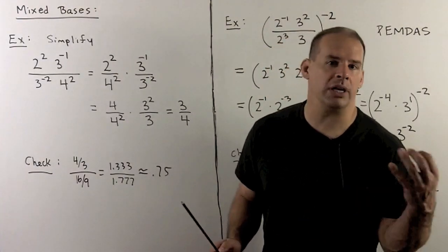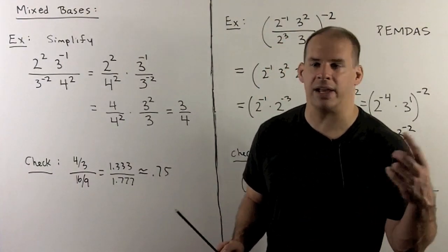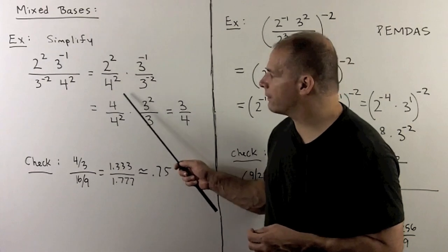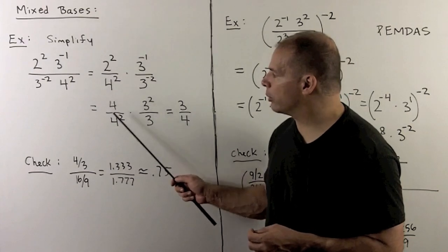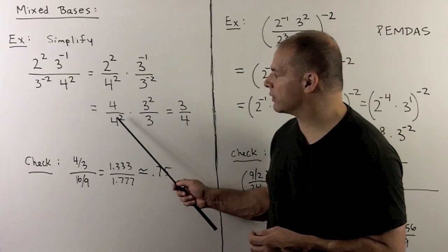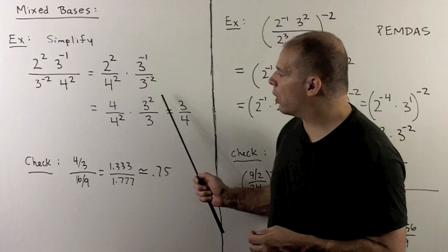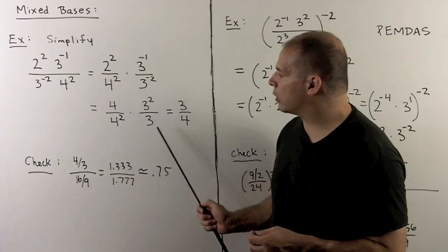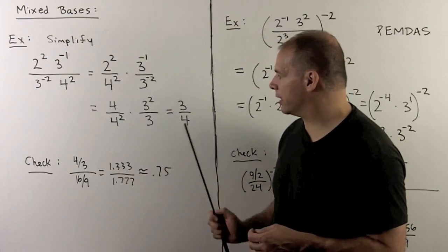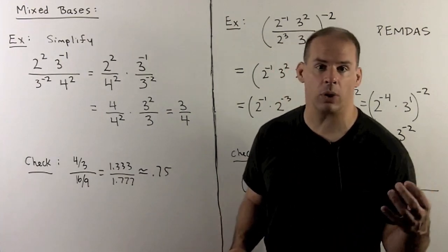We don't need to use any fancy rules here — we just do cancellation. I can cancel the four in the numerator with one four in the denominator to give us a four. Cancel one three in the numerator with three in the denominator to give us a three in the numerator. So we get three fourths.